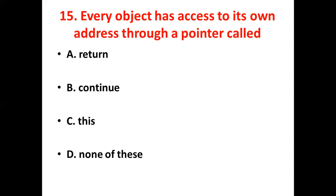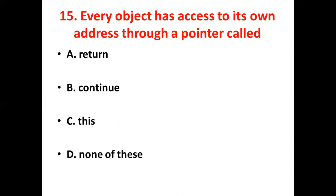Fifteenth bit. Every object has access to its own address through a pointer called dash. Option A: Return. Option B: Continue. Option C: This. Option D: None of this. Answer: Option C, this.